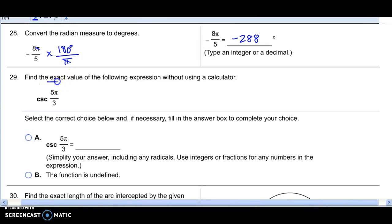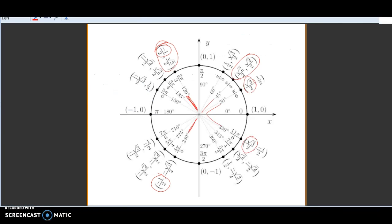29, I'm going to find an exact value, so that means what? Unit circle. And so I want the exact value of cosecant of 5π over 3. So let's go to the unit circle, and let's find 5π over 3. Where is 5π over 3? Do you see it?